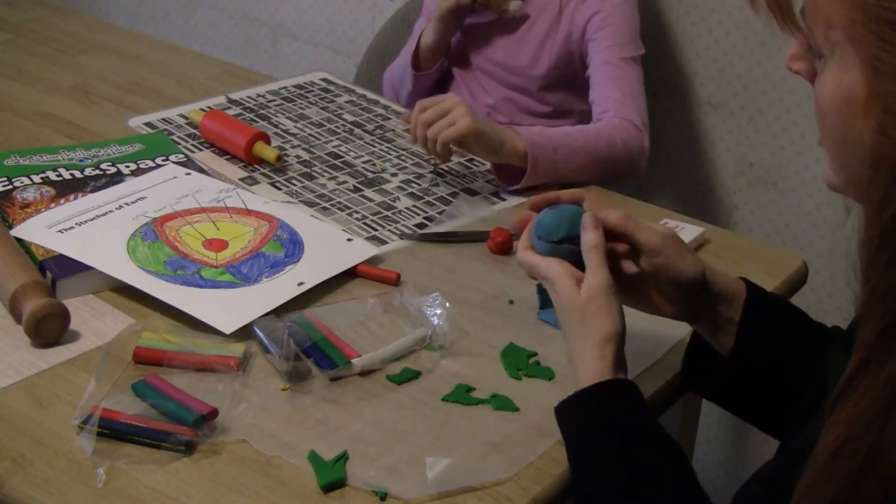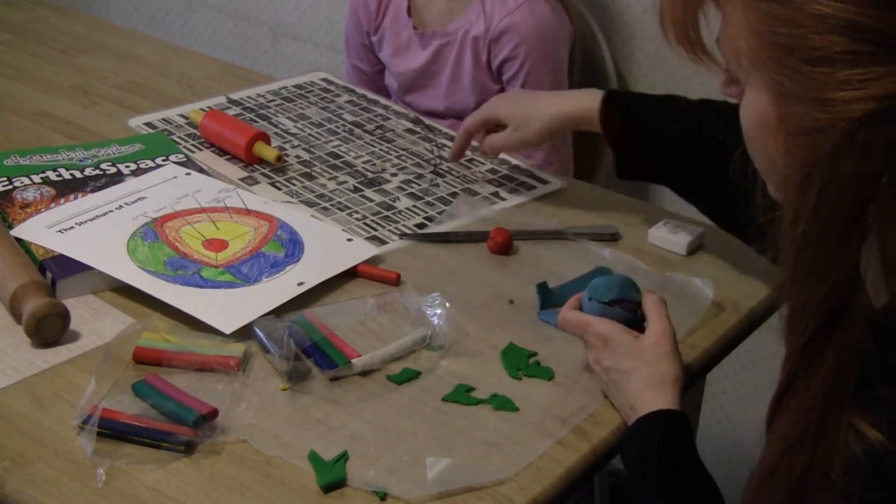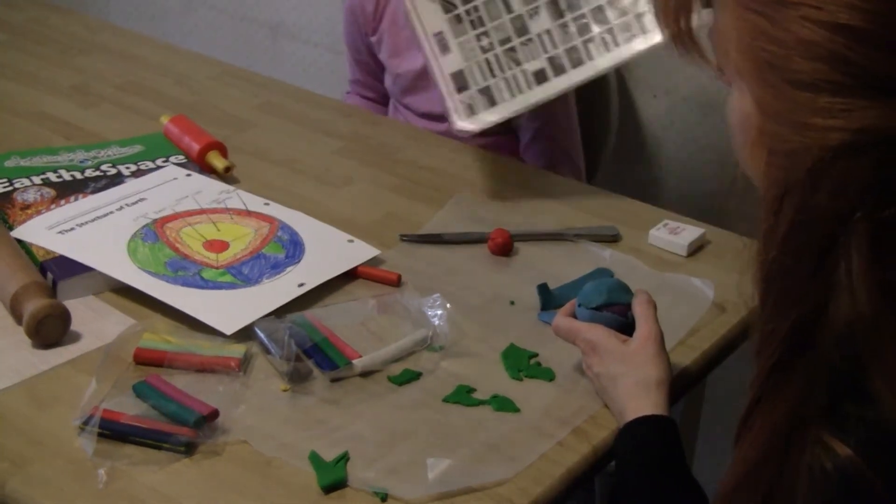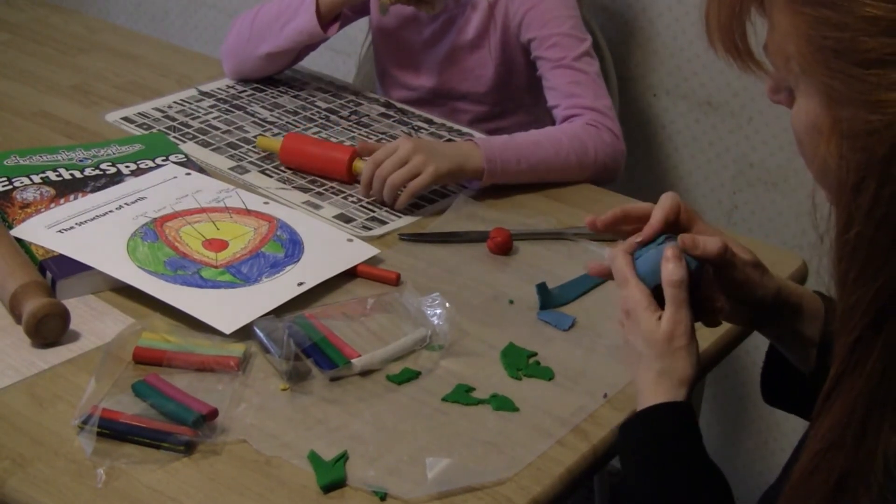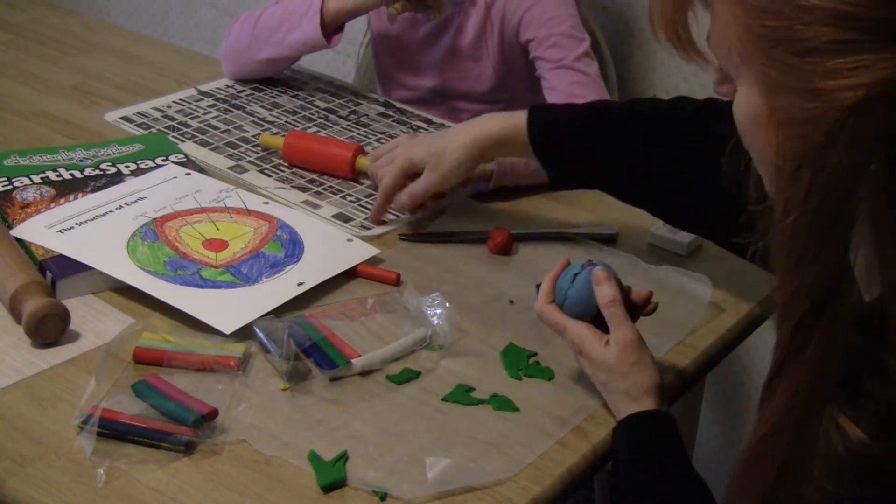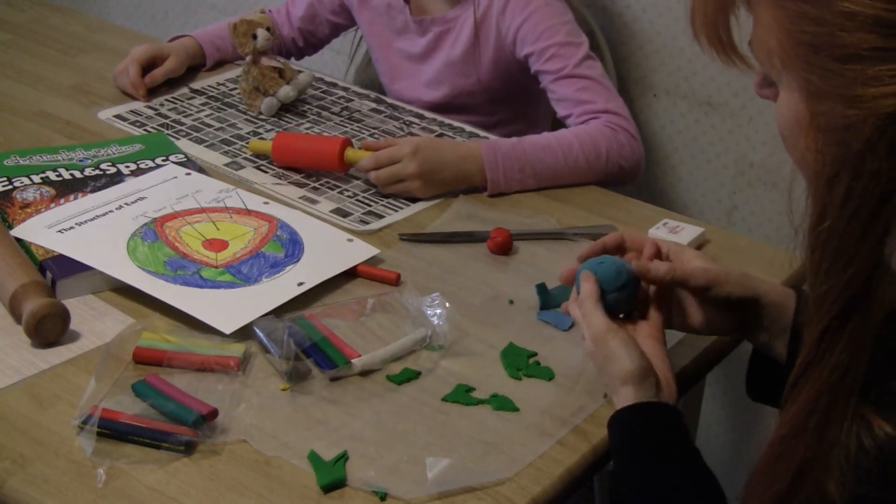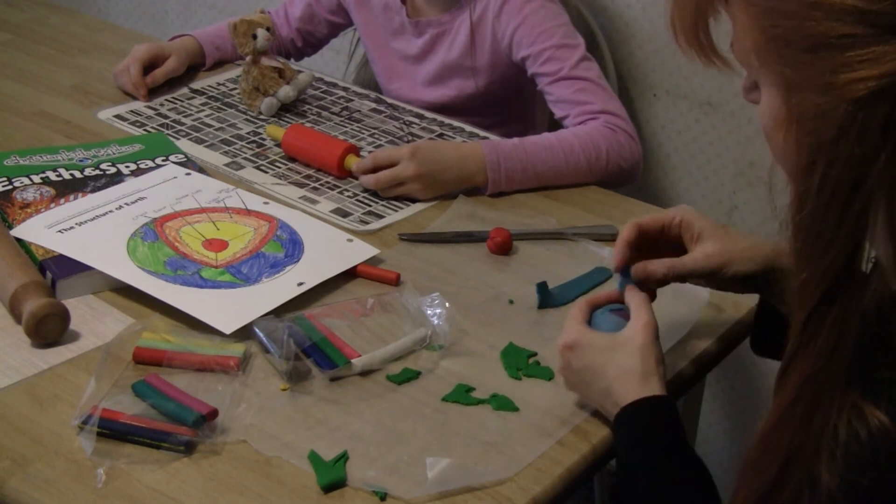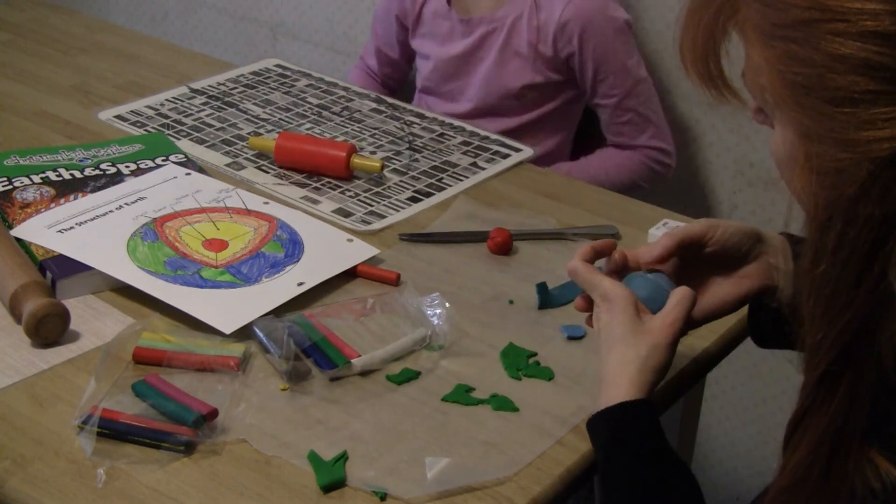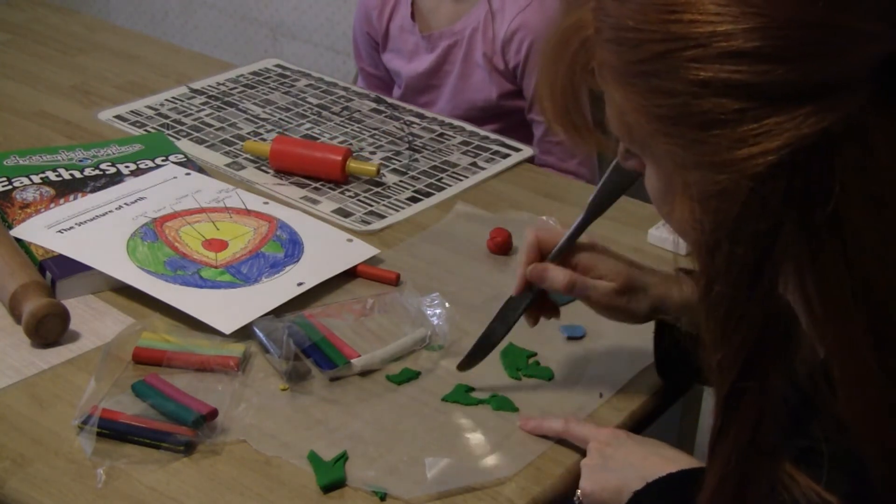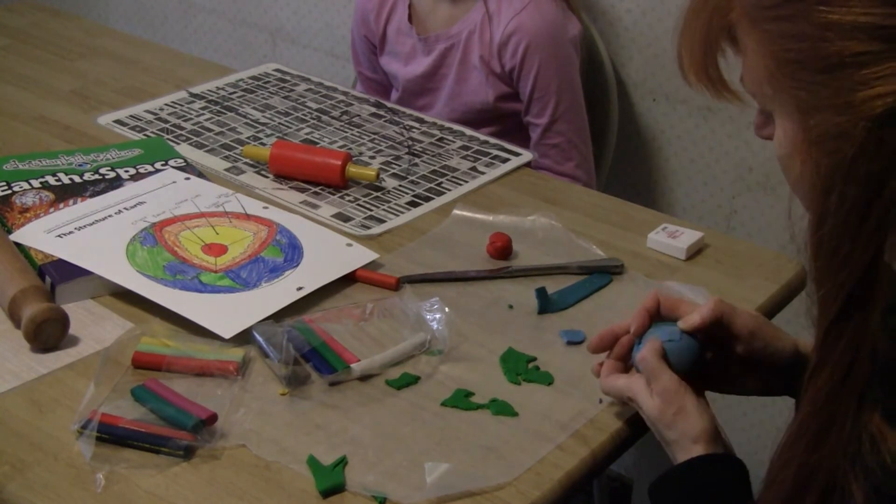And one other tip in working with clay is you want to put something under it like wax paper, but really a placemat that is laminated is better than wax paper because it won't come up and it won't be annoying in any way.